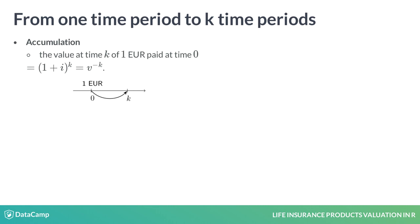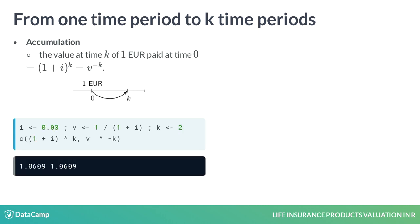You can extend this idea to k time periods instead of just one. The timeline on the left shows how one euro at time zero grows to (1 plus i) to the power k euro at time k, or in terms of v, the discount factor, that's v to the power minus k euro. In the R code, you see how this works with k equals 2 and a rate of 3%. You obtain 1.06 euro at time two.